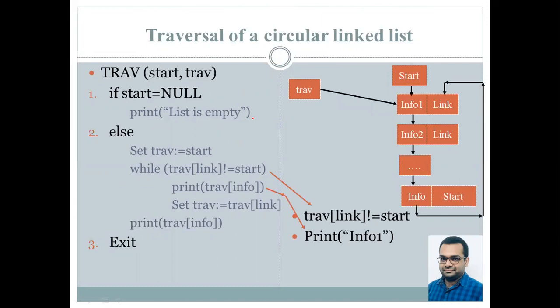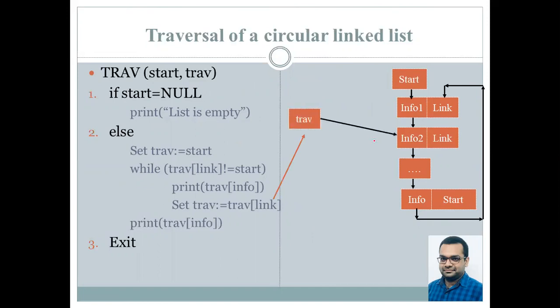Now we check since traversal's link is not equal to start, this being not the last node. So therefore we print its information part, that is info1 over here. And we increment traversal to point to the next node, that is traversal equals to traversal's link. So now you can see earlier traversal pointed over here. Now after the incrementation it points to the next node which is over here.